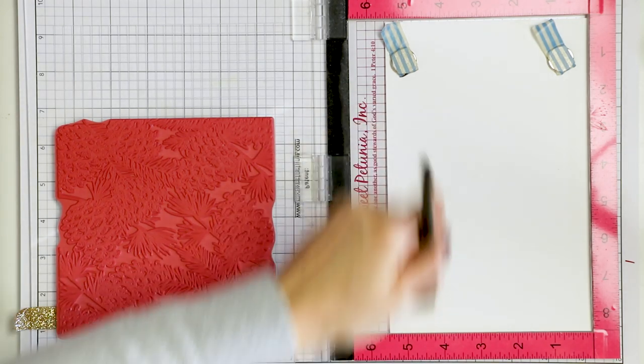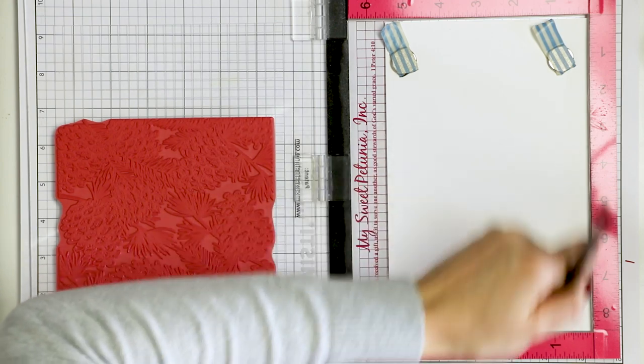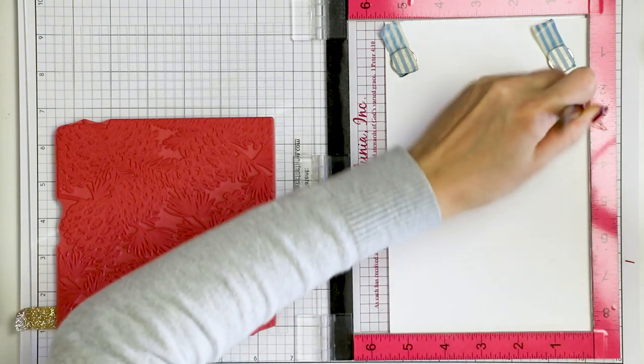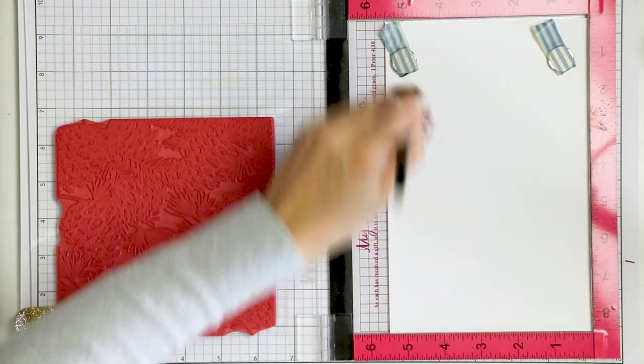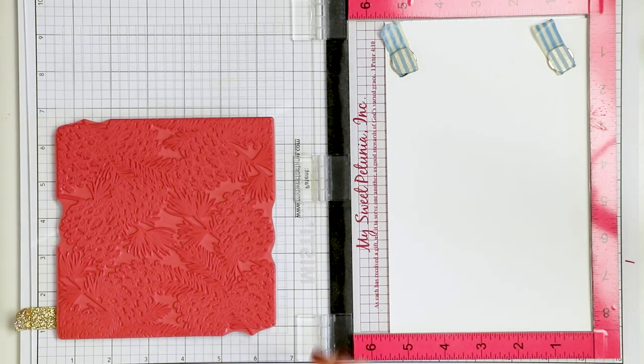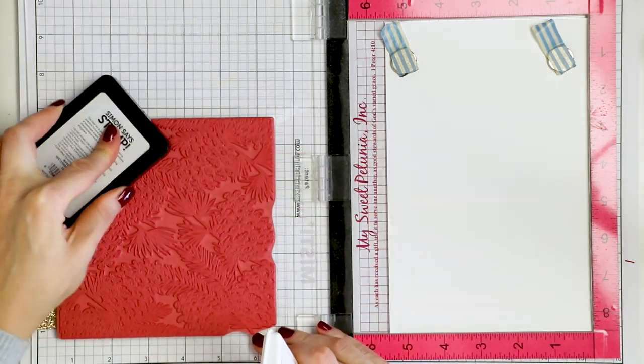To make sure my embossing is going to be neat, I'm treating the paper with anti-static powder. I like to tap on my anti-static powder tool from the back and spread the powder around the paper using a dry paint brush.